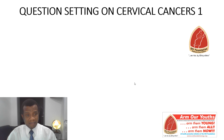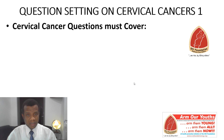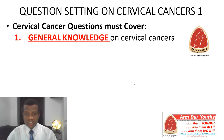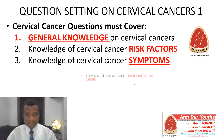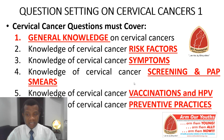Questions setting on cervical cancers: the very first slide talks about things you must cover. Just like was the case in breast cancers, questions on cervical cancers must cover very key things. There are six aspects of cervical cancers, and every single one of them must be included in every exam — be it a mid-term test or end of year. These six aspects are: general knowledge on the cancers, risk factors, symptoms, screening and pap smears, vaccinations and HPV, and finally preventive practices. All of these must be included in any question for any exam, even a mid-term test.